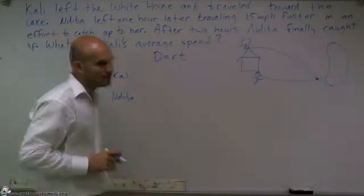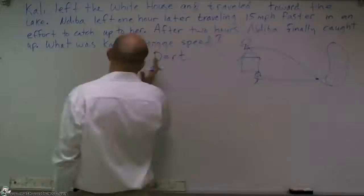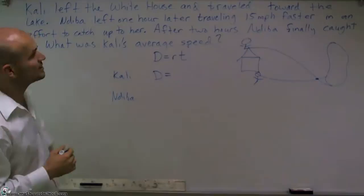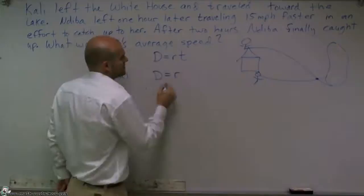So for Callie, I don't know what the distance is that she traveled. When I'm looking at this, I say alright, well, I know that's a travel event, but I don't know what that distance is. So the distance traveled right now is just going to be D. I also don't know Callie's rate. We know that Nadeeba traveled 15 miles per hour faster, but I don't know faster than what. So I'm just going to keep that as R.